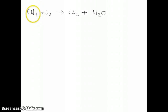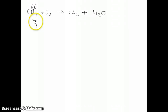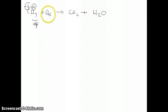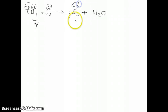Starting with methane: we know hydrogen must be plus one, so four hydrogens gives plus four total, which means carbon must be negative four. For O2, it's a free element, so both oxygens have an oxidation number of zero. For CO2: oxygen is negative two, and with two oxygens that's negative four total, so carbon must be positive four to balance. That's the oxidation number for carbon in CO2.